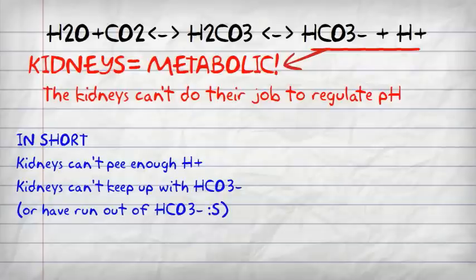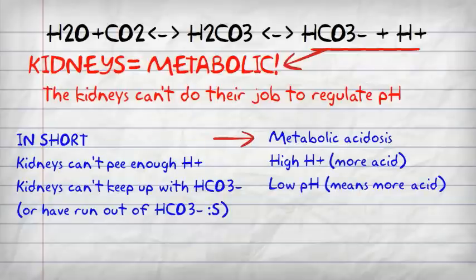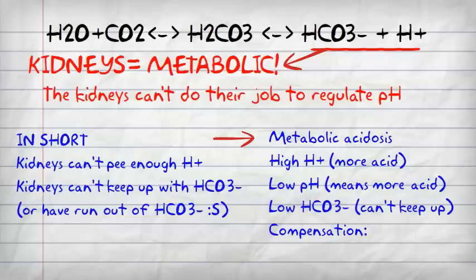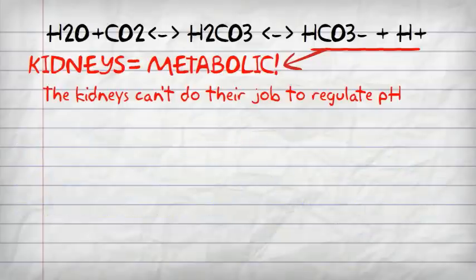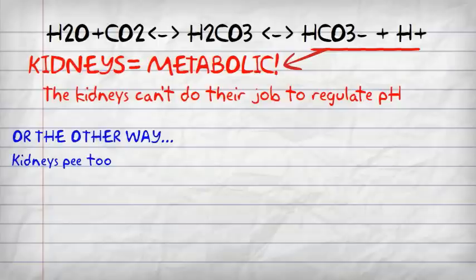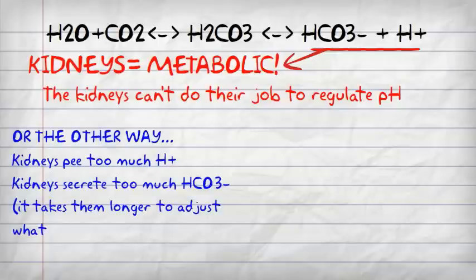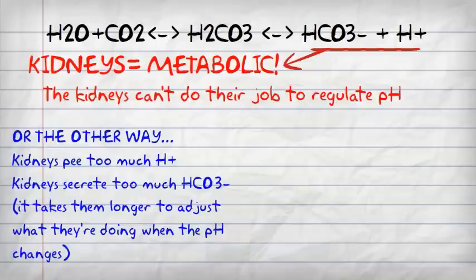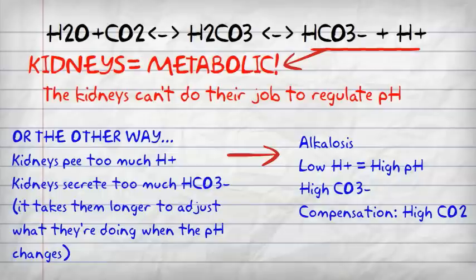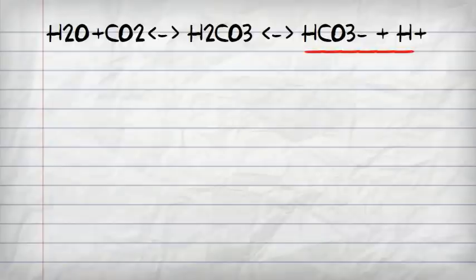In short, when the kidneys can't function, it causes a pH imbalance. In metabolic acidosis, the hydrogen ion concentration is too high, the pH is too low, and the bicarbonate is too low. Conversely, when the kidneys are secreting too much hydrogen or too much bicarbonate, we get alkalosis — low hydrogen concentration, high bicarbonate, high pH, compensated with CO2.